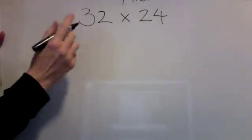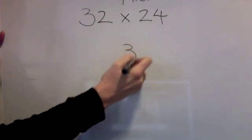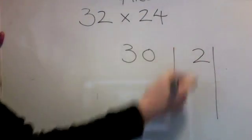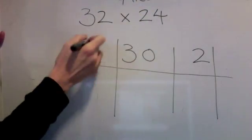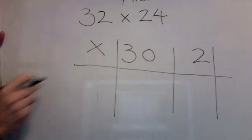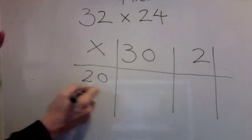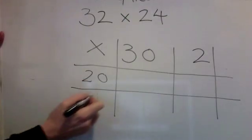I can break this number down into 30 and 2. There's my grid. And I can multiply it by breaking this number down into 20 and 4.